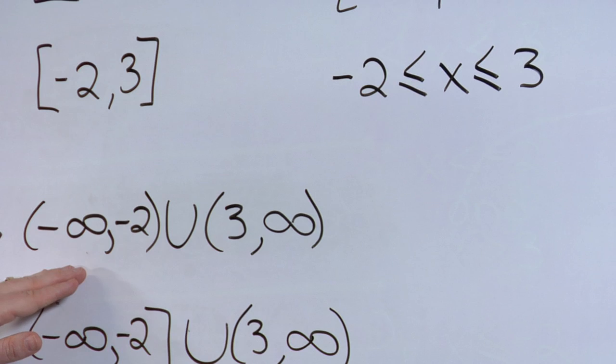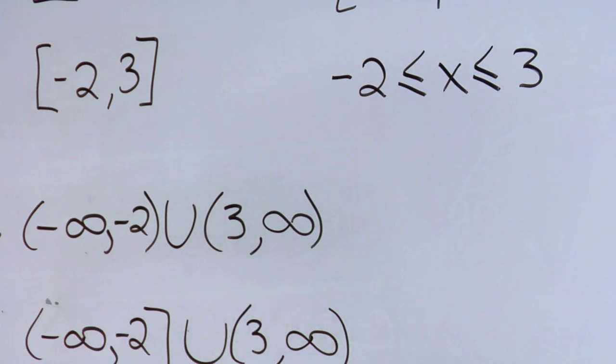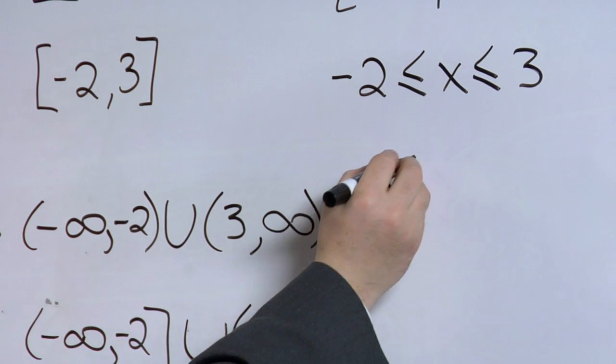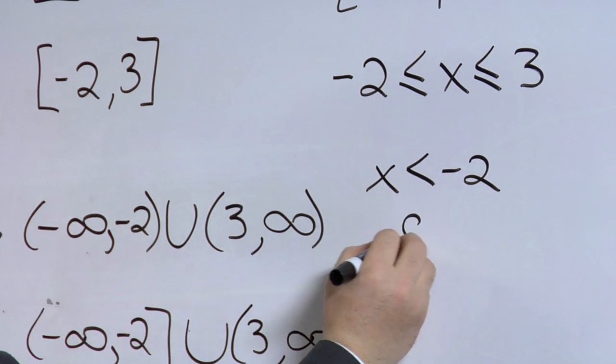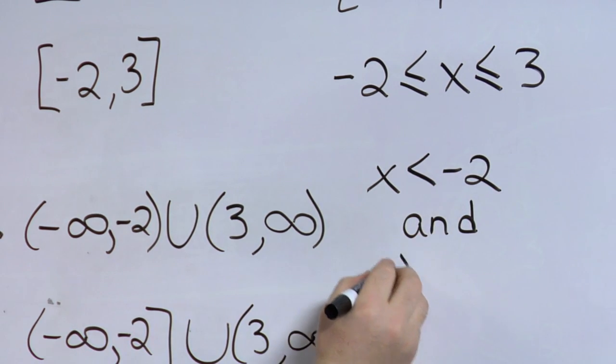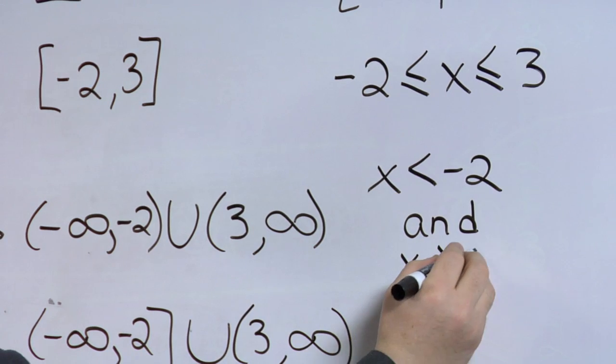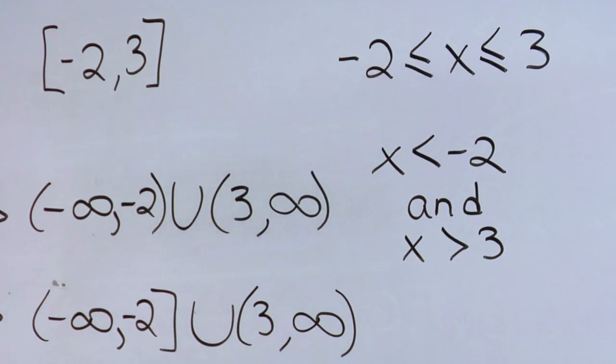The second example is going to be all values that are less than negative 2 and all values greater than 3.